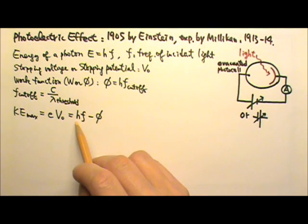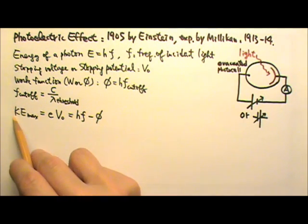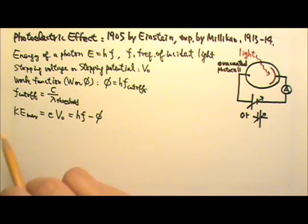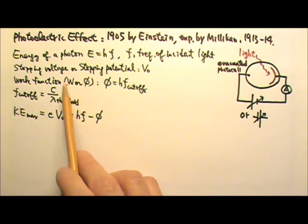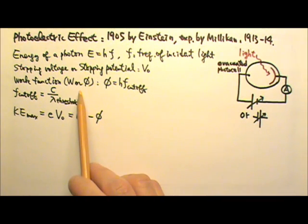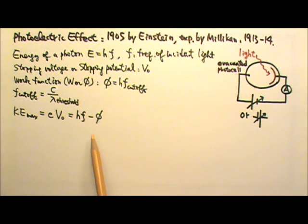And that leftover energy would be the maximum kinetic energy of the electron. This is the maximum kinetic energy, because for inner shell electrons, it takes more than the work function for those electrons to be freed. So those electrons would be ejected with less kinetic energy than this.